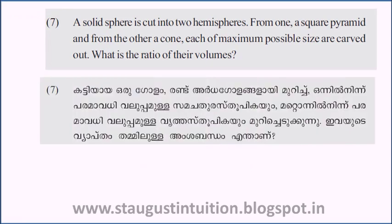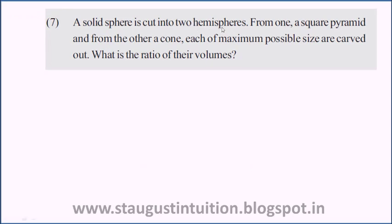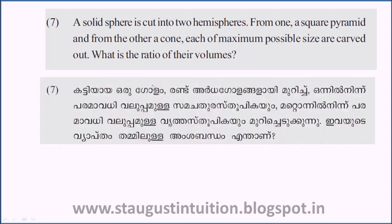A solid sphere is cut into two hemispheres. From one, a square pyramid, and from the other, a cone, each of maximum possible sizes, are carved out. What is the ratio of their volumes?